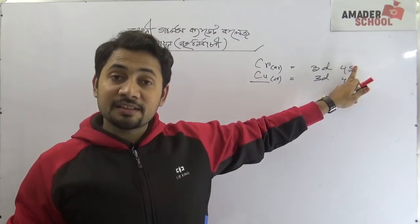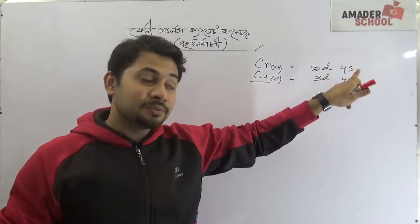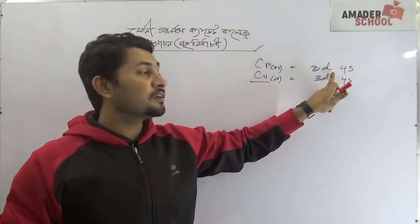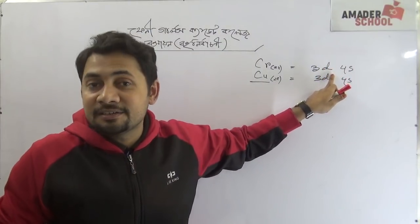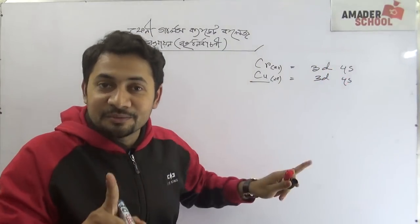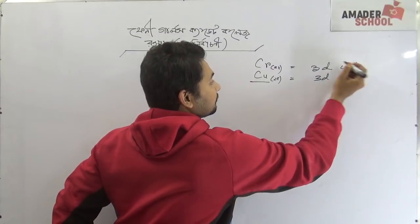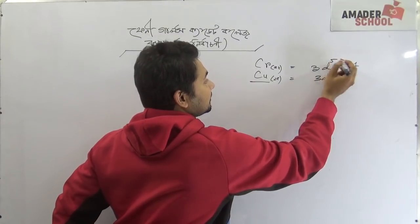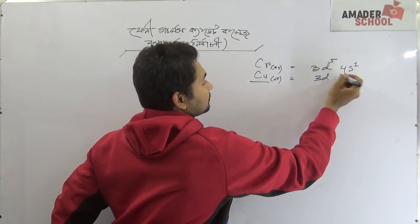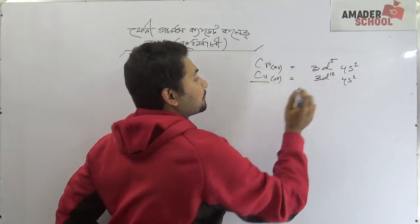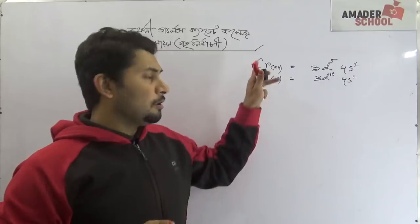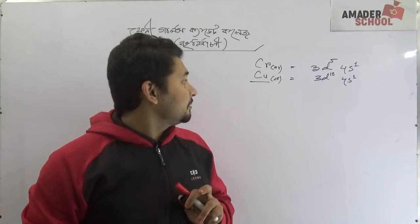For 4S: chromium has the exceptional configuration 3d5, 4s1, and 3d10 — so this is chromium's special electron configuration.